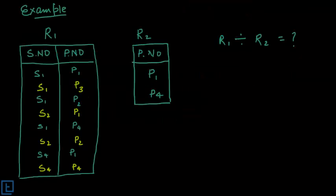So here we have a simple example to understand the division operation. Two relations are there, R1 and R2. R1 has schema serial number and phone number. R2 has phone number.